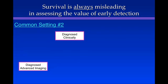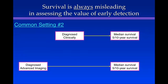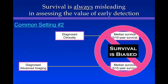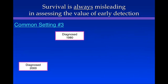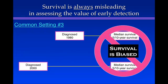Here's another common setting: comparing patients who are diagnosed clinically — those who have symptoms — with patients who are diagnosed using advanced imaging, things like CTs, MRIs, etc. You follow them forward in time, you measure median or 5- or 10-year survival — survival is biased. Here's a third setting: comparing patients diagnosed in the past, say 1980, with patients diagnosed more recently, say 2000, when there's a lot more advanced diagnostic imaging going on. If we measure survival, survival will be biased.